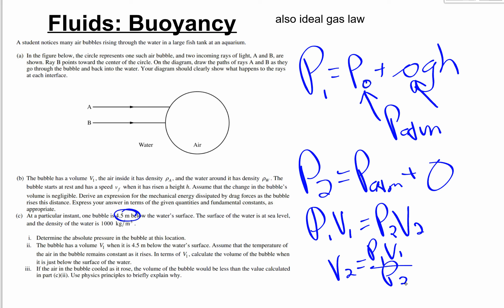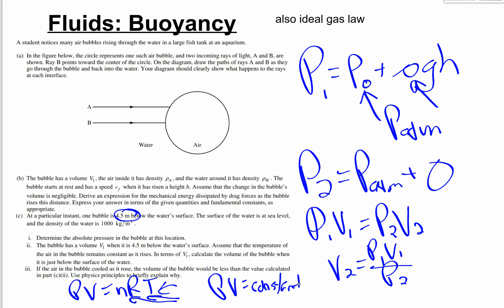If the air in the bubble cooled as it rose, the volume would be less than calculated. Using pv equals nRT: for part two, temperature was constant so pv equals constant. But if temperature drops, pv decreases. Since pressure is already decreasing by p1 over p2, the volume decreases even more than the isothermal case when temperature also drops.